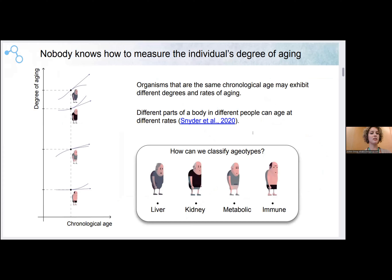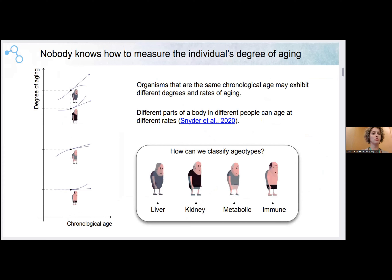There is also a very huge unsolved question: how can we measure the degree of aging? Now there are a lot of approaches, but the very fundamental, generally accepted algorithms do not explain the fundamentals of the aging process. We still don't know how many variables we need to predict mortality and to get information about the spent resource of a living organism. Individuals with the same age may have different degrees of aging, different rates of aging, and different accelerations of aging.